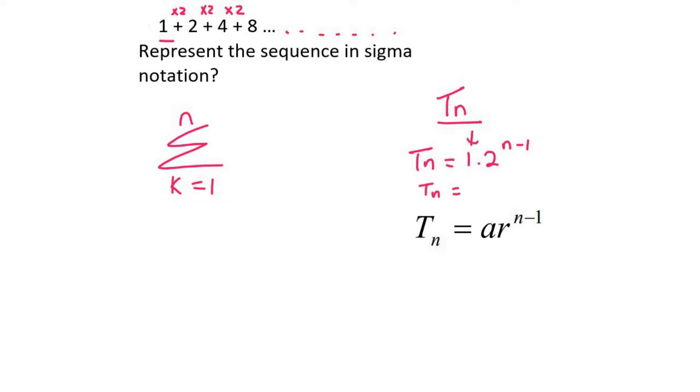So this 1 over here doesn't even need to be there because that doesn't really do anything, so it's just 2 to the n minus 1.